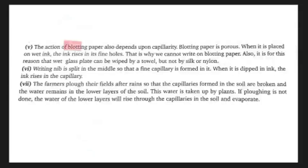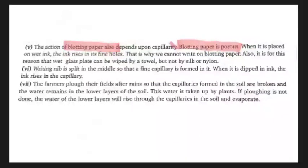Fifth example: blotting paper. If we place a dot of ink from a pen nib on blotting paper, the ink spreads very fast because blotting paper is porous and has innumerable capillaries. The ink rises in those fine capillary holes. This is why we cannot write on blotting paper. A wet glass plate can be wiped by a towel but not by silk or nylon because a towel has very fine innumerable capillaries.